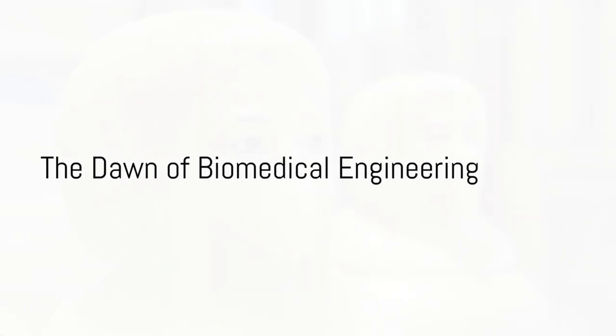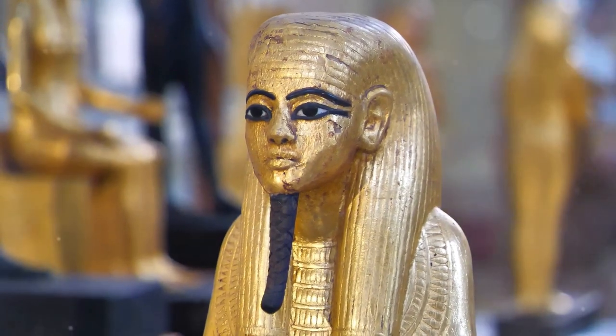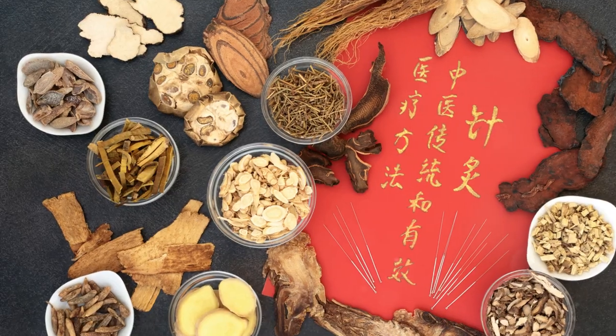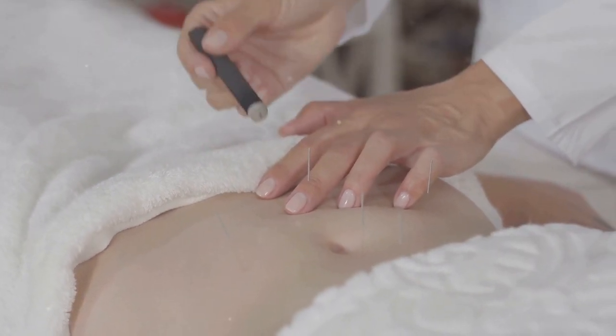Ever wondered how our ancestors dealt with body malformations and injuries? They utilized what nature provided them. Picture the ancient Egyptians who ingeniously implanted artificial eyes, ears, and noses into mummies.